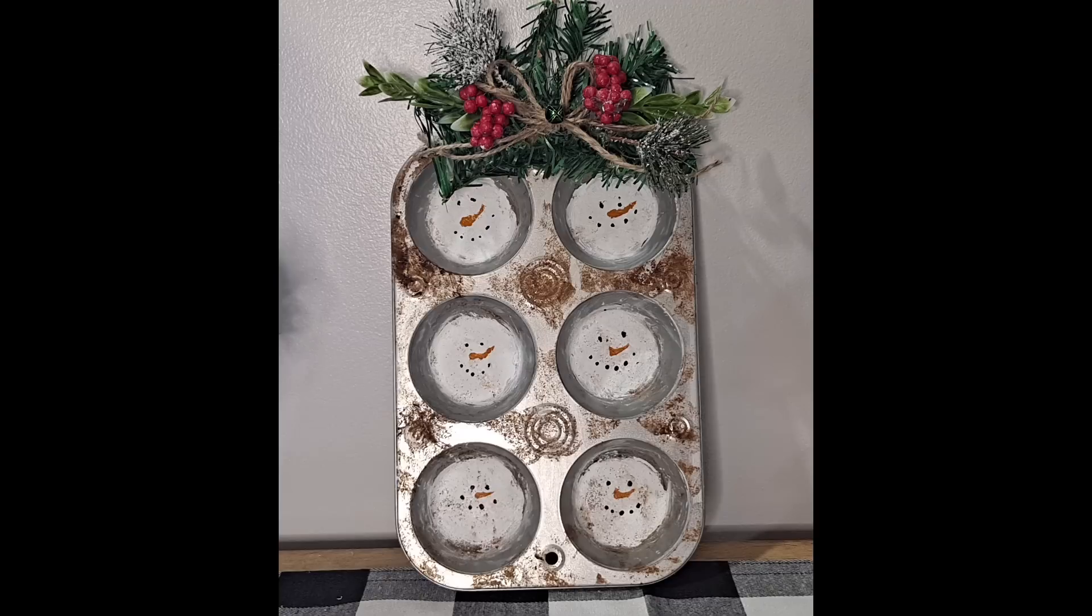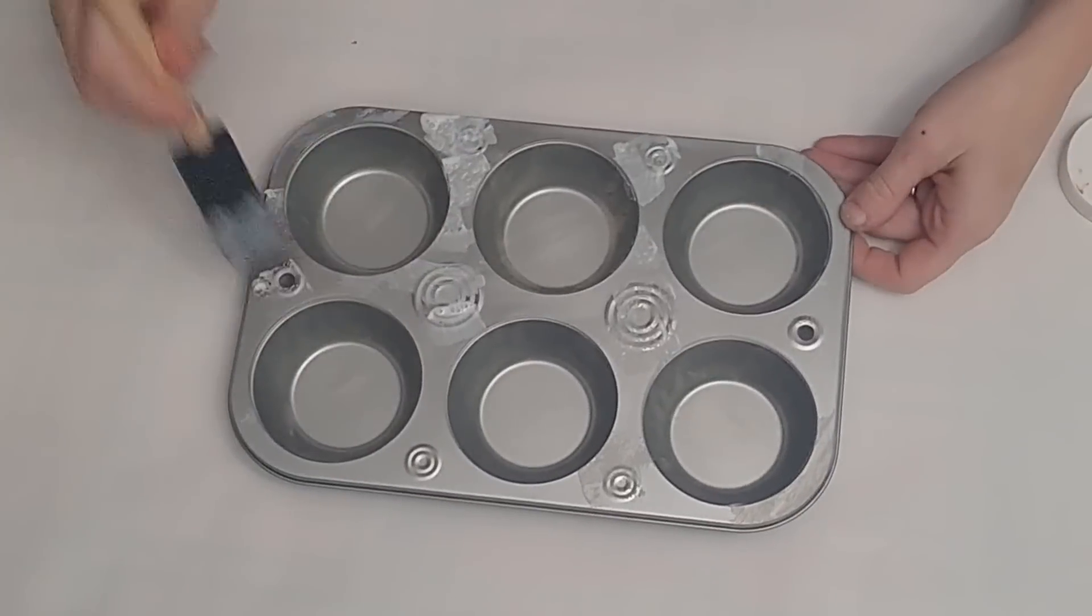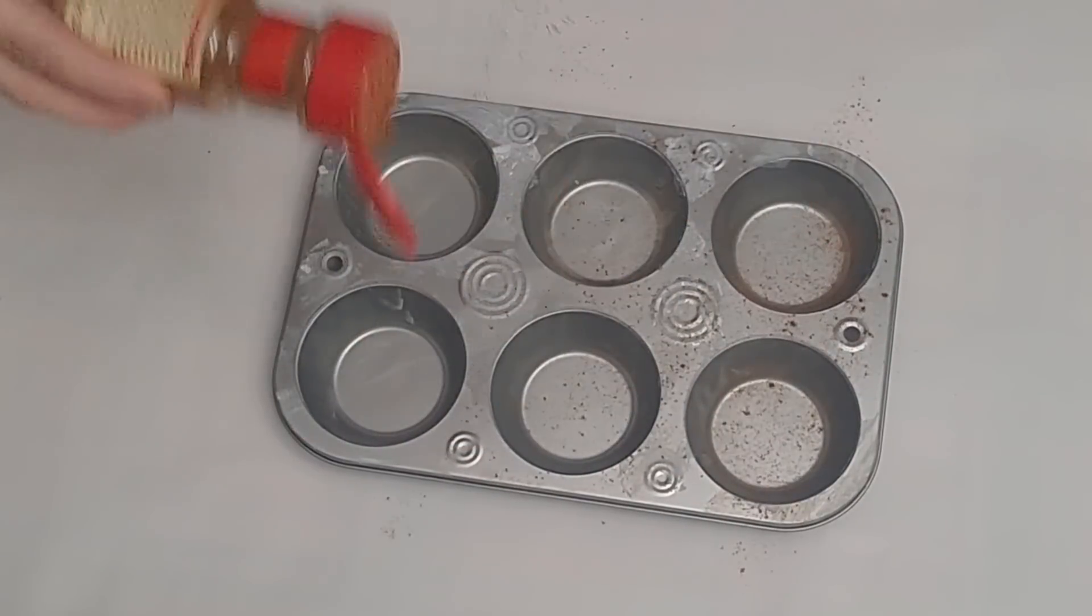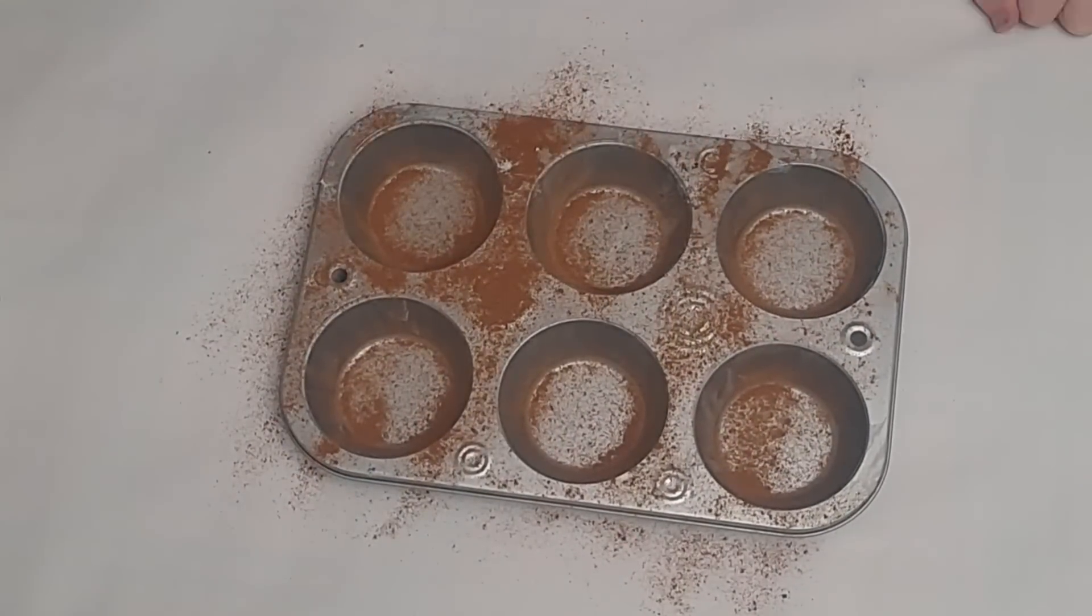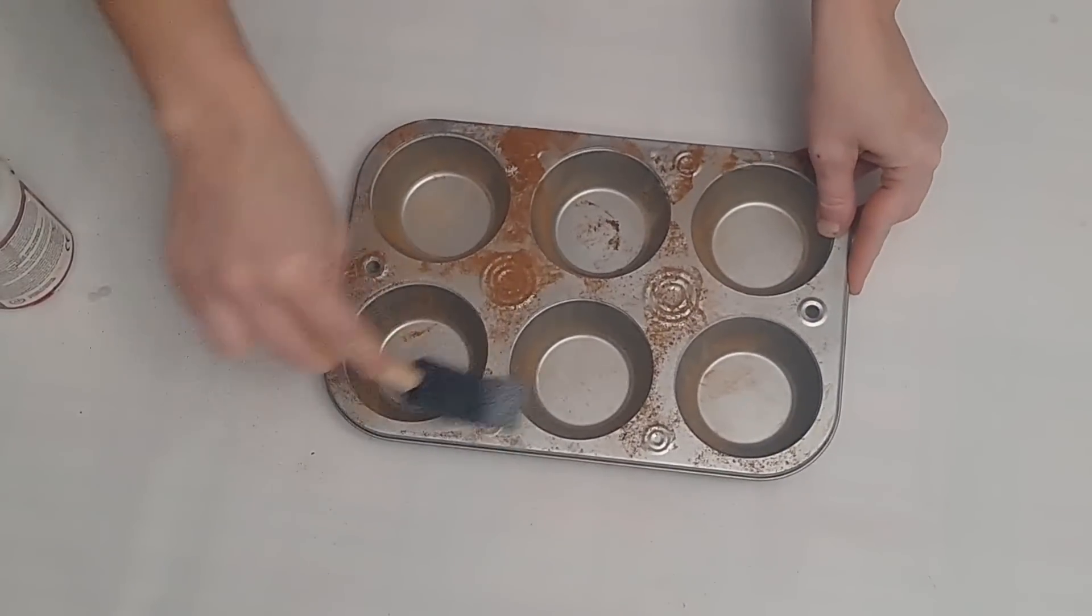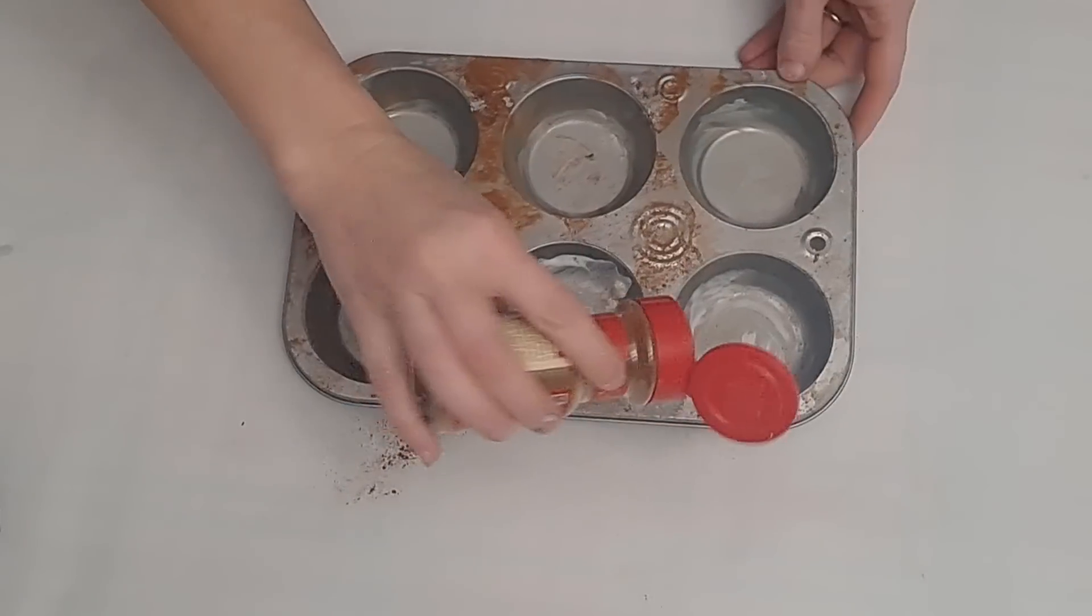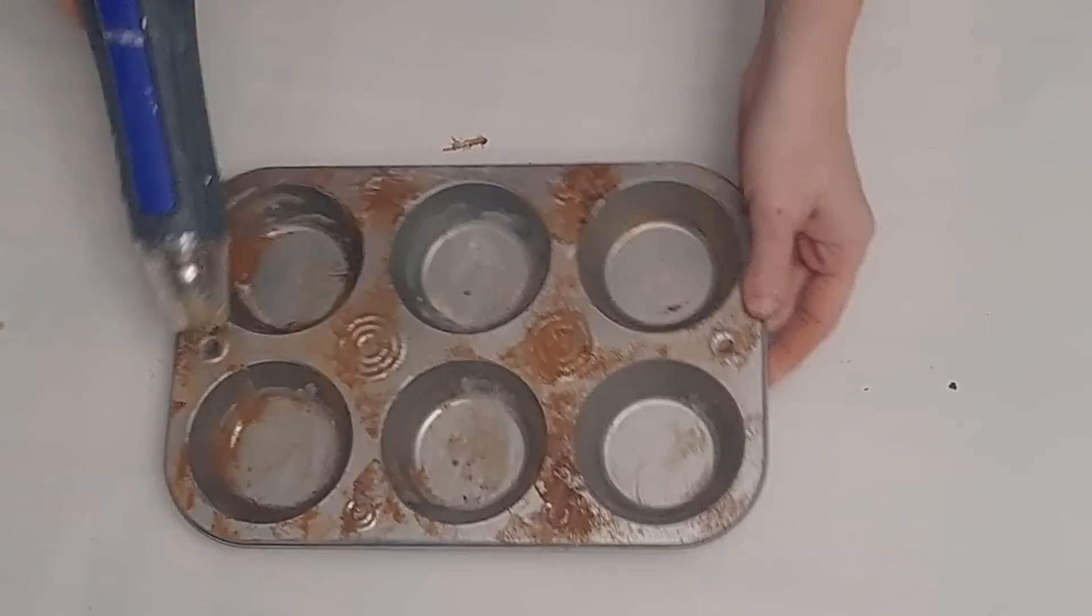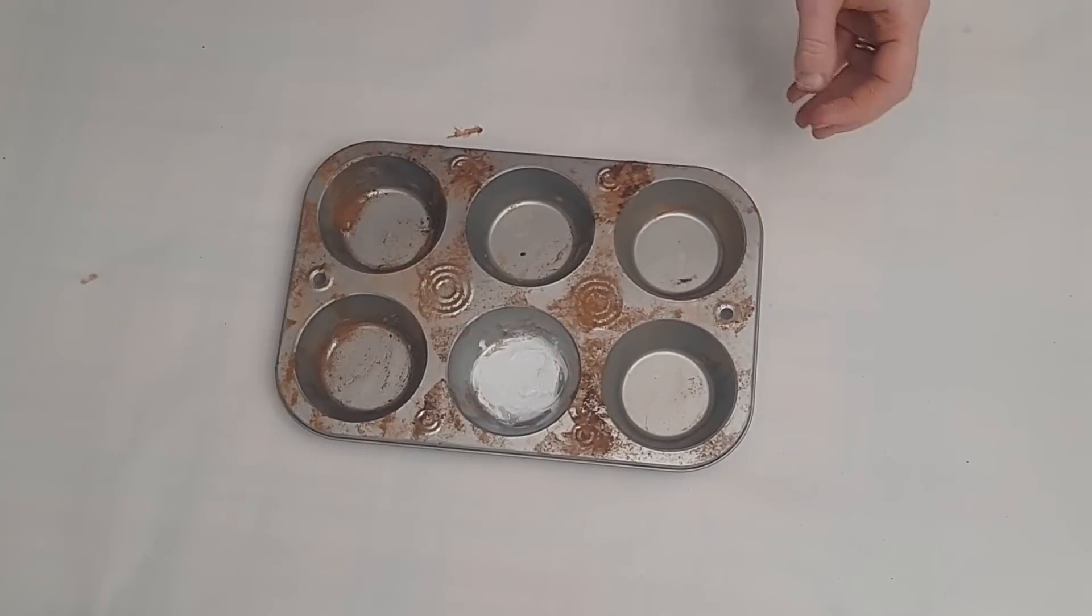So this next DIY is a recreation of one of Rebecca's projects. I absolutely loved it and wanted to do it myself, so I grabbed a muffin tin from the Dollar Tree and I grabbed a sponge brush from the Dollar Tree as well. I put Mod Podge on my sponge brush and then dabbed it in spots that I wanted to look rusty. I then sprinkled cinnamon generously over the places where I placed the Mod Podge. I shook off the excess cinnamon and continued to do this until I got the desired look. Once I got the look that I wanted, I then put Mod Podge in the bottom of my cups as well because this is going to allow me to paint it and have the paint adhere better and not just scratch off.